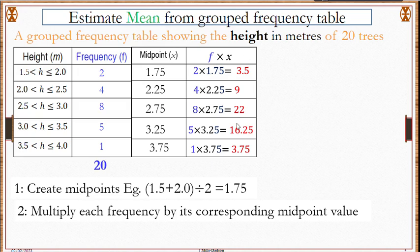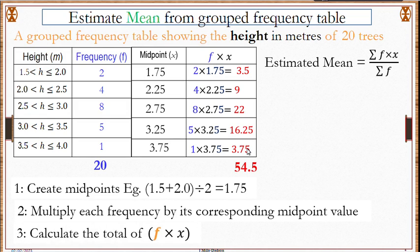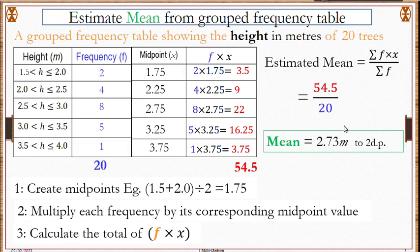Next is to calculate the totals of the frequencies and the total of fx. So total is 54.5 for fx. Our frequency is already 20. To estimate the mean we divide the total of fx by total of f and our answer is 2.73 meters correct to two decimal places.